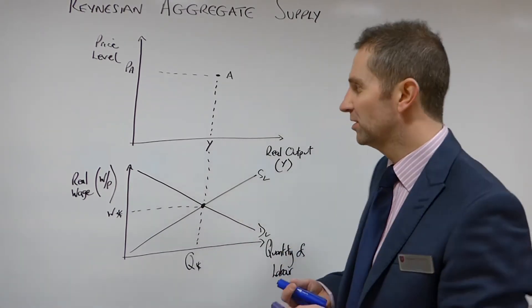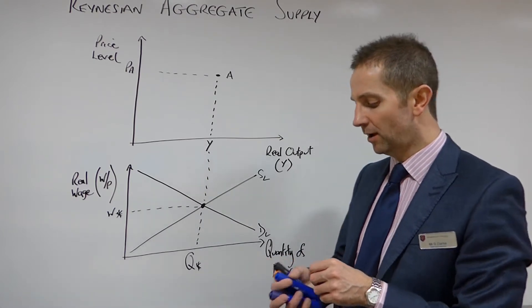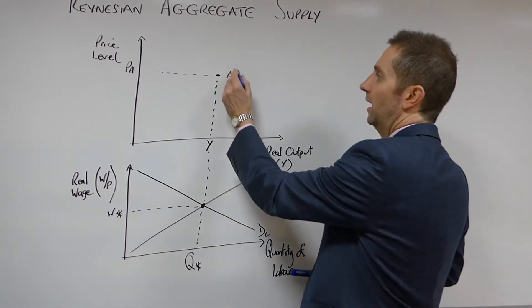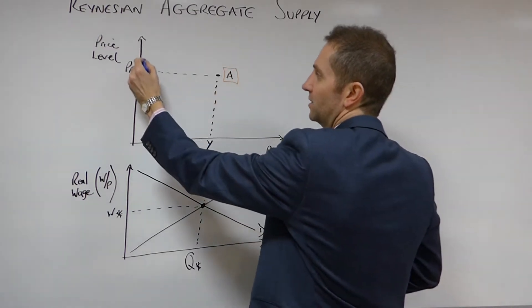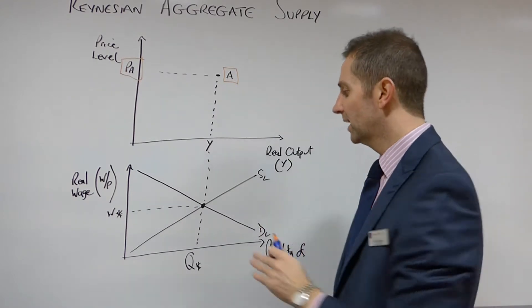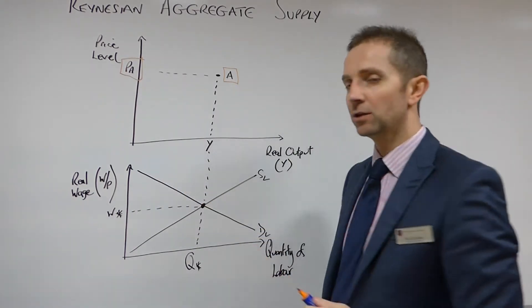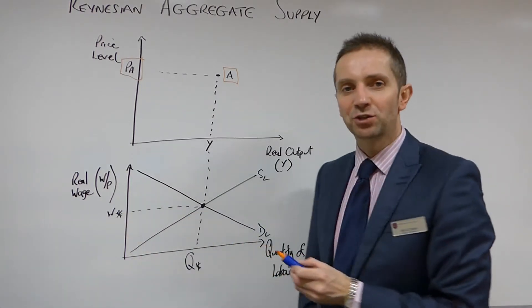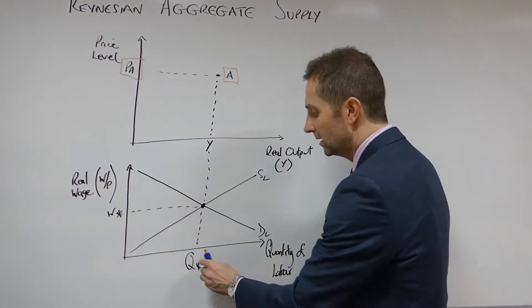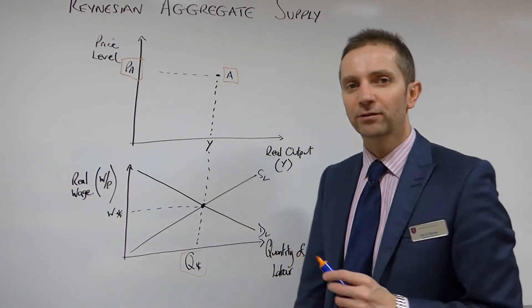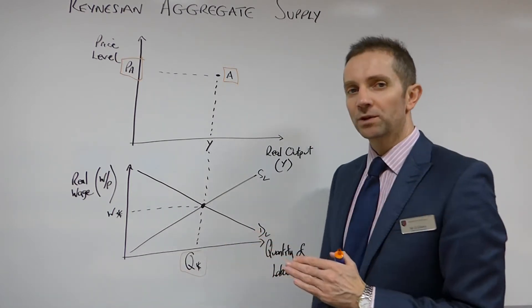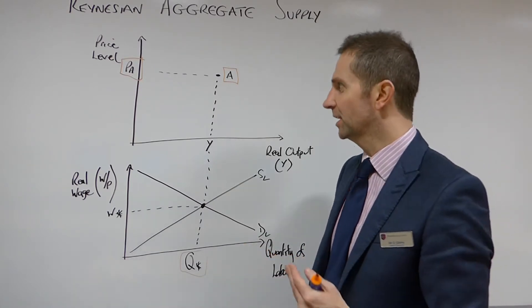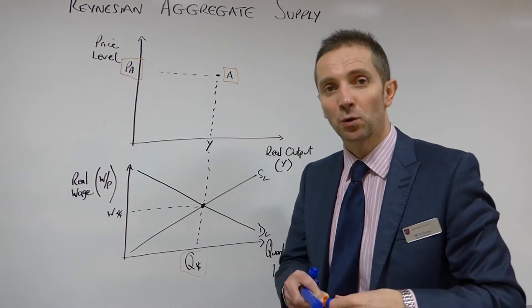In the same way as we considered the classical aggregate supply, I'm starting off initially at point A here. And I am saying that this price PA enables the labour market to clear, in other words for there to be equilibrium in the labour market at a real wage of W star and an employment level of Q star. We'll say a little bit more about what this employment level signifies for Keynesians in a short while.